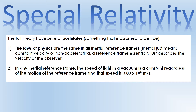Special relativity has what we call postulates — things that are assumed to be true, and then we carry out thought experiments to see what they imply. The first postulate is that the laws of physics are the same in all inertial reference frames. Inertial just means constant velocity or non-accelerating. As an observer, you need to be stationary or traveling at constant speed. A reference frame essentially describes how fast an observer or an object is traveling, and if you're traveling at the same speed as something else, you're described as being in the same reference frame.